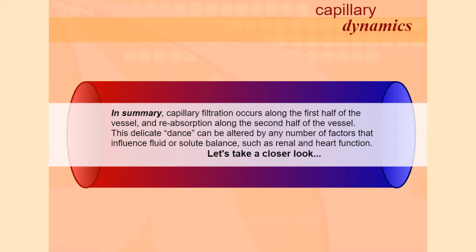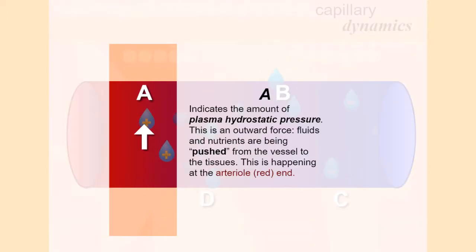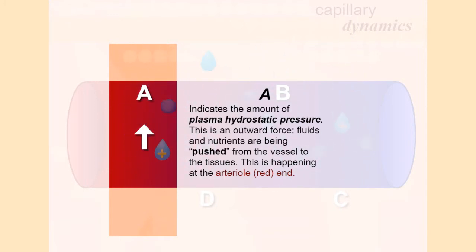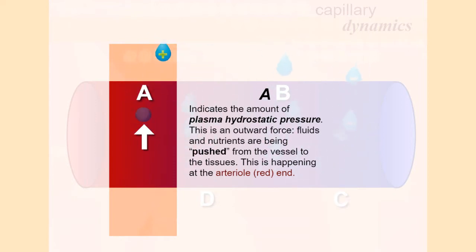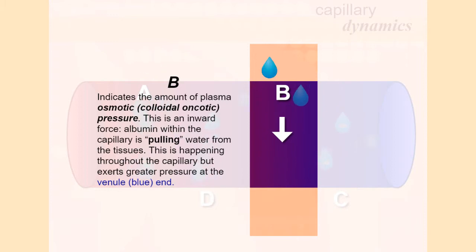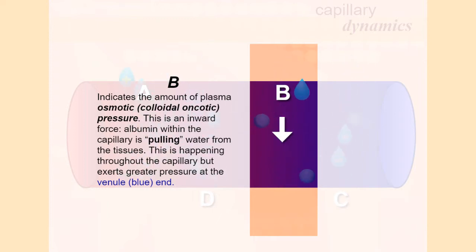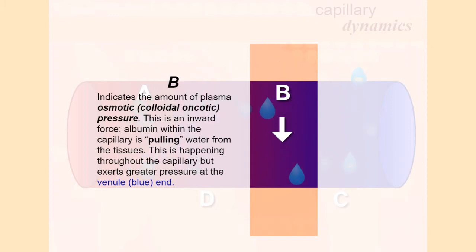Let's take a closer look. A indicates the amount of plasma hydrostatic pressure. This is an outward force — fluids and nutrients are being pushed from the vessel to the tissues. This is happening at the arterial end. B indicates the amount of plasma osmotic pressure. This is an inward force. Albumin within the capillary is pulling water from the tissues. This is happening throughout the capillary but exerts greater pressure at the venule end.